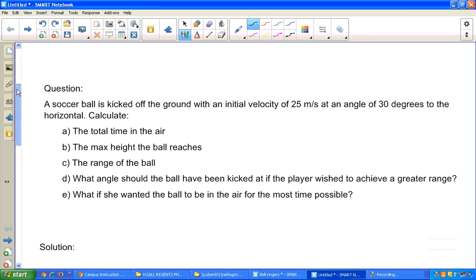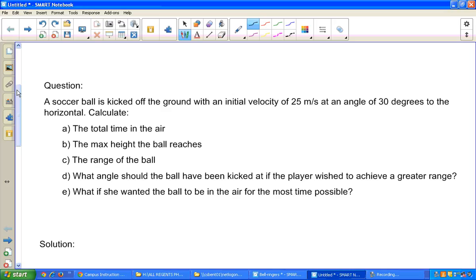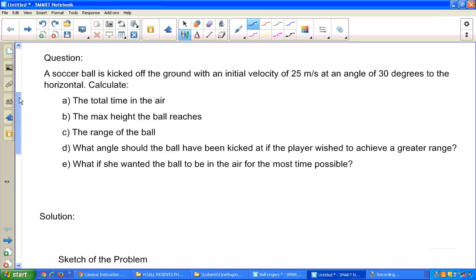Here's the question we're going to work on. A soccer ball is kicked off the ground with an initial velocity of 25 meters per second at an angle of 30 degrees to the horizontal. We're going to calculate the total time the ball is in the air, the maximum height the ball reaches, and the range.